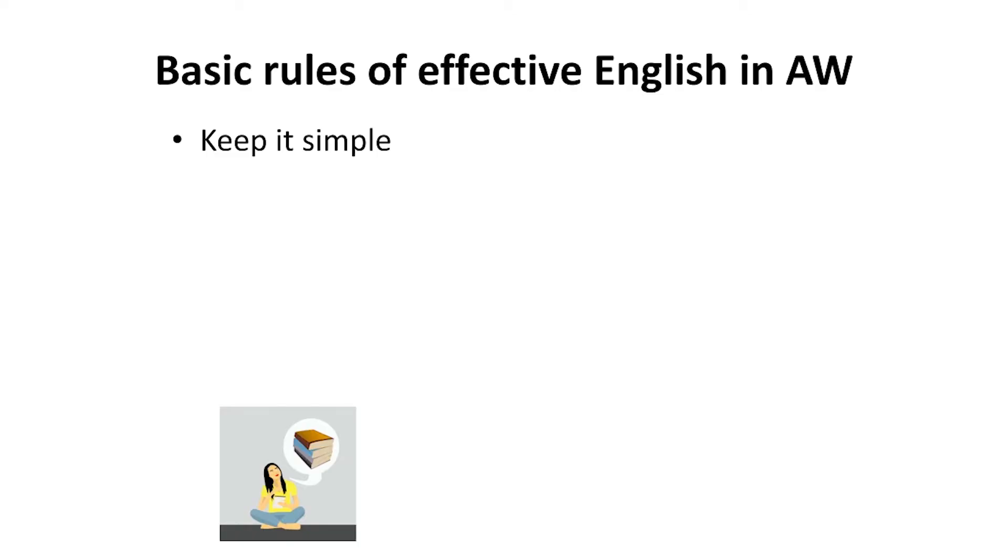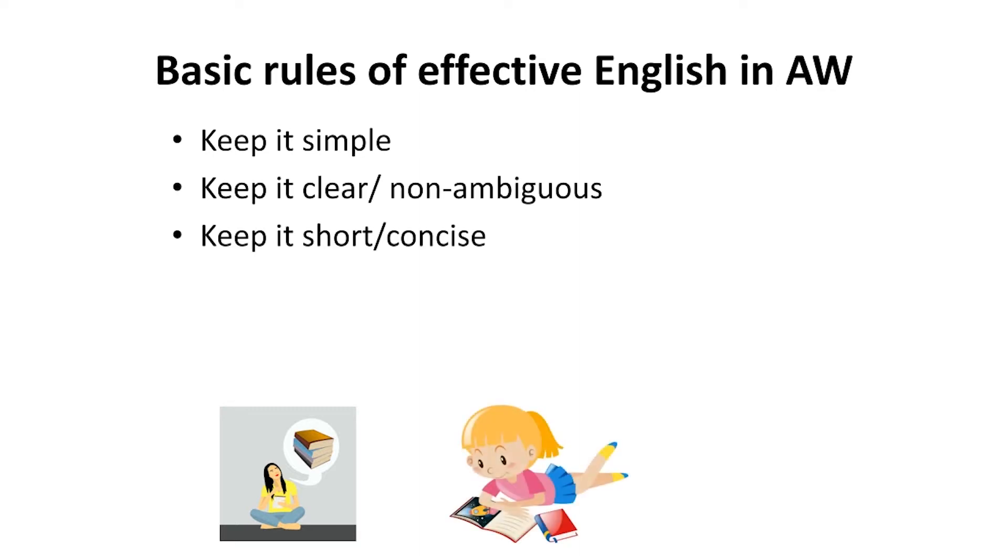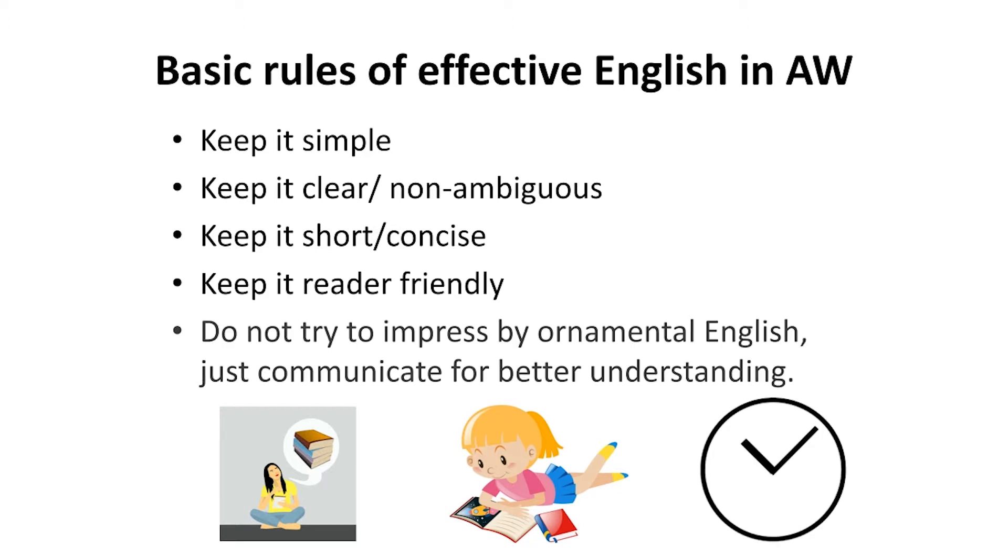Now let us focus on the basic rules of English in academic writing. What should we do when we are writing in English for academics? First thing: be simple. Simplicity is the key. Keep it simple, keep it clear, non-ambiguous. Keep it short, concise. Keep it reader-friendly, and do not try to impress by ornamental English. Just communicate for better understanding.